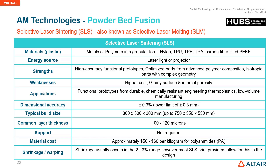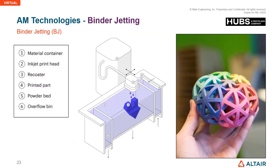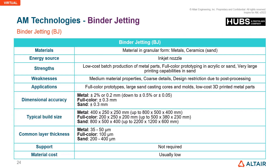For the SLS method, the slide shows available materials, energy source used, strengths, weaknesses, industry applications, achievable dimensional accuracy, typical build size, commonly used layer thickness, support requirements, material cost, and efficiency regarding shrinkage and warping. The second supported process is binder jetting, and its slide similarly covers materials, energy source, strengths, weaknesses, applications, dimensional accuracy, and typical build size.